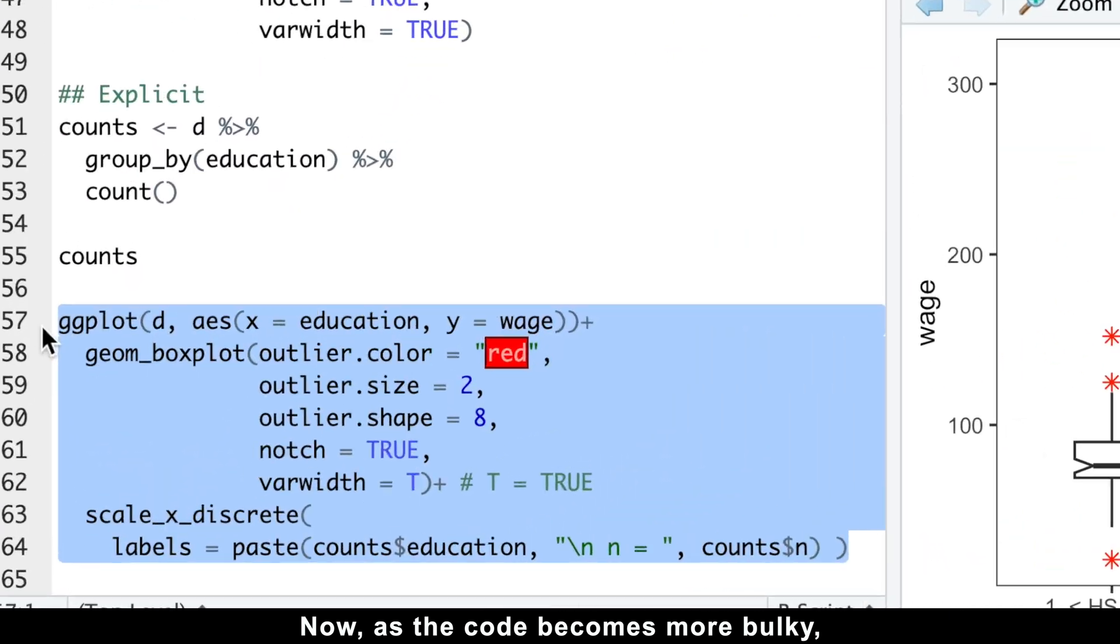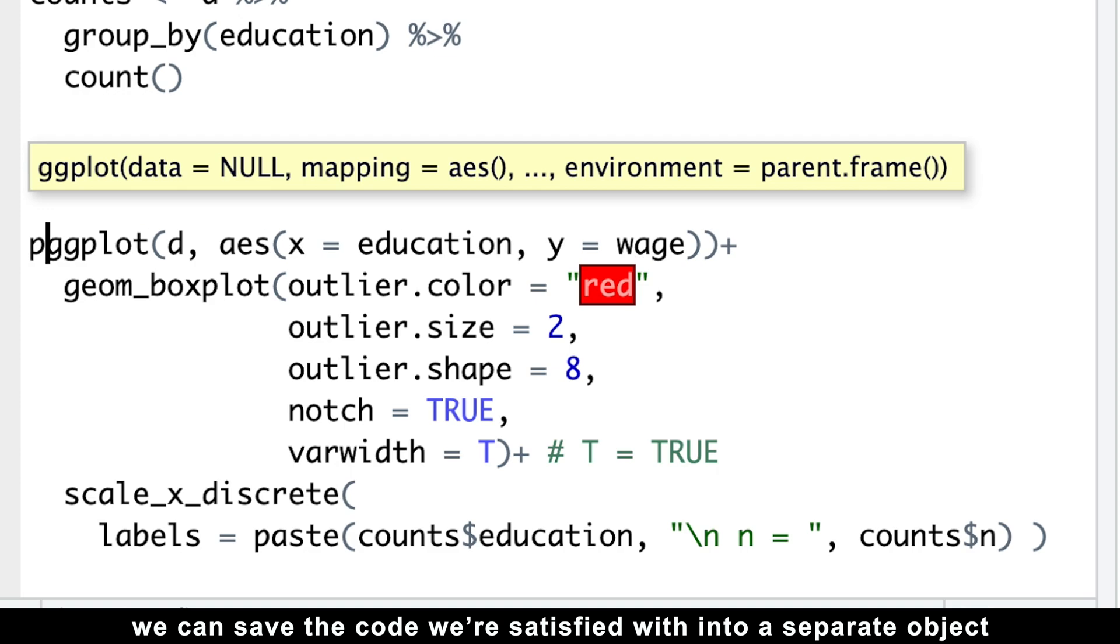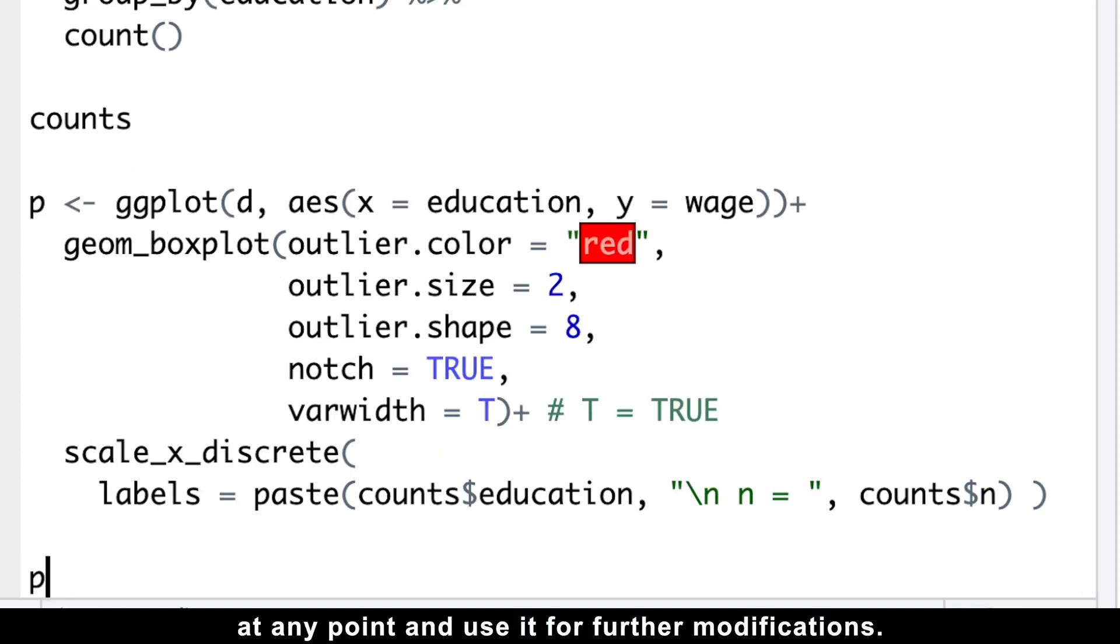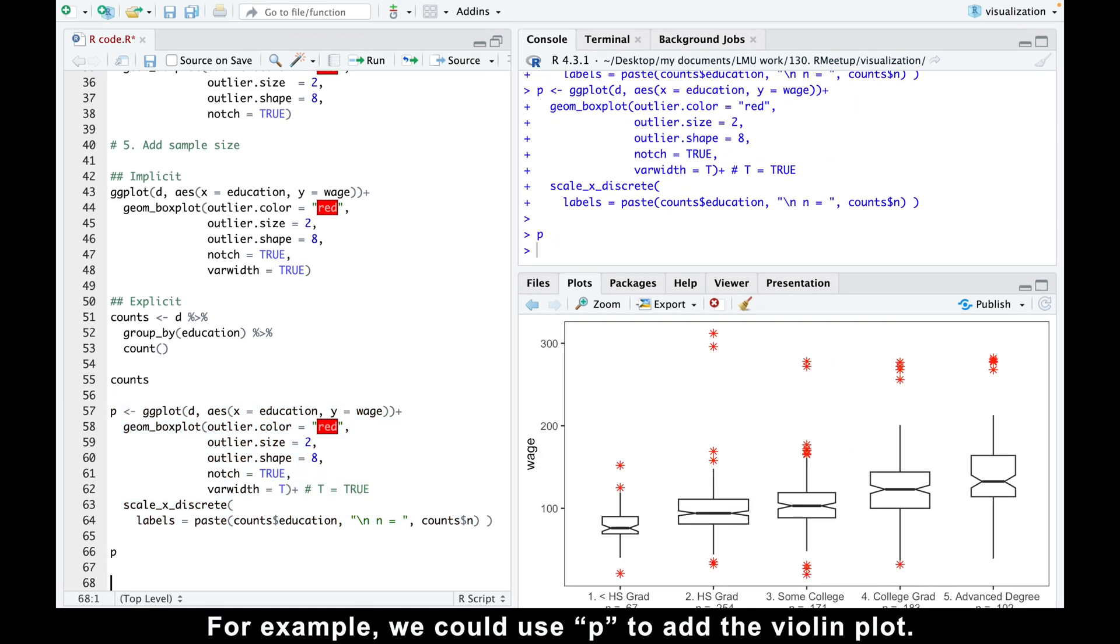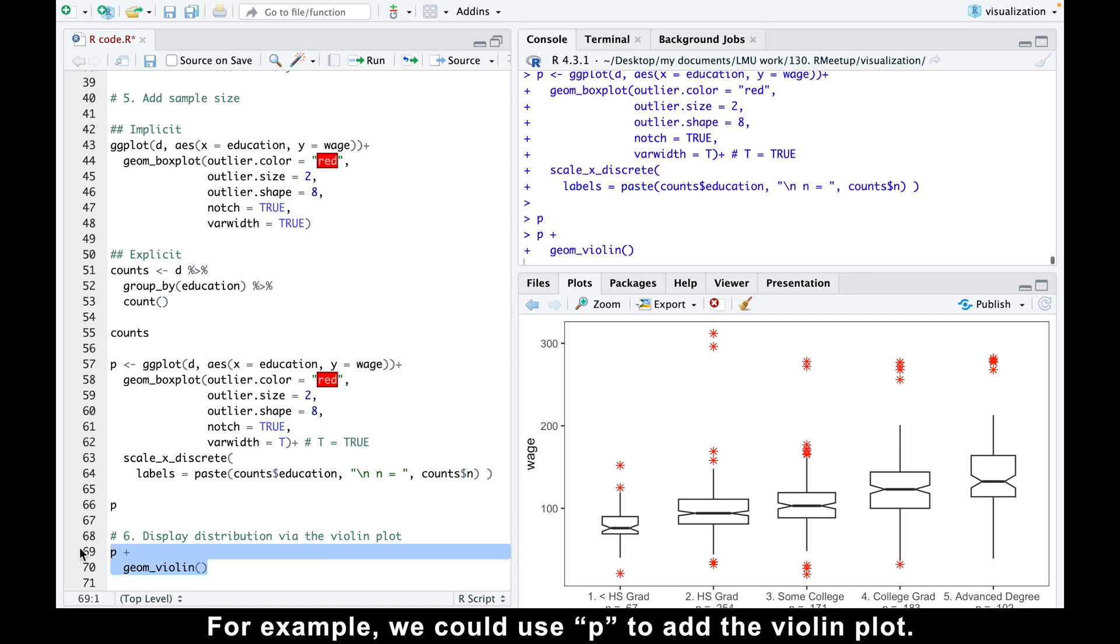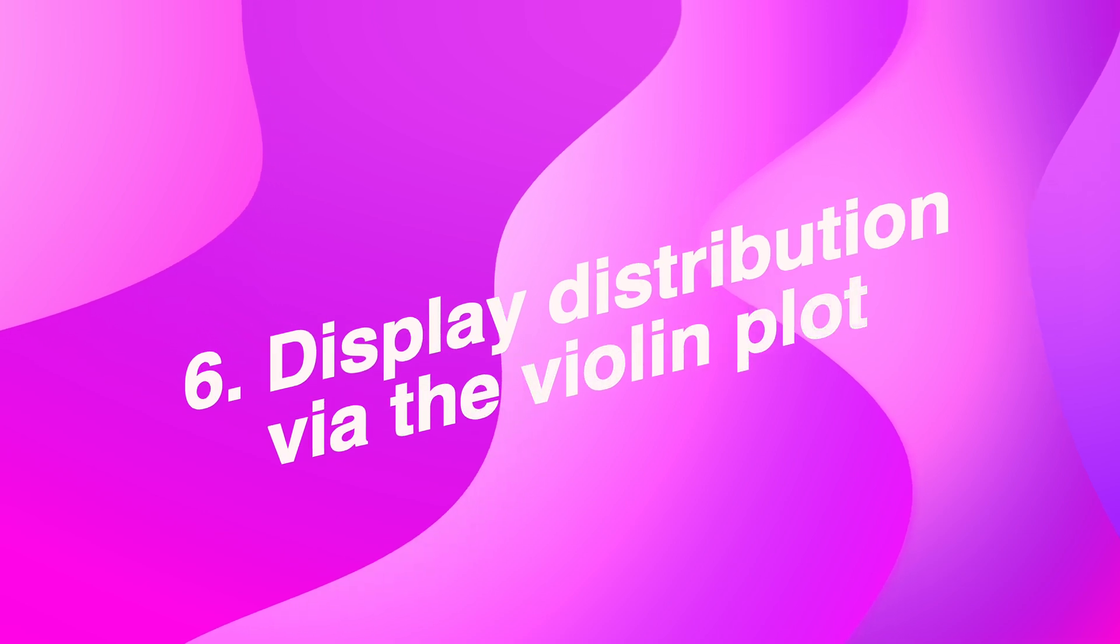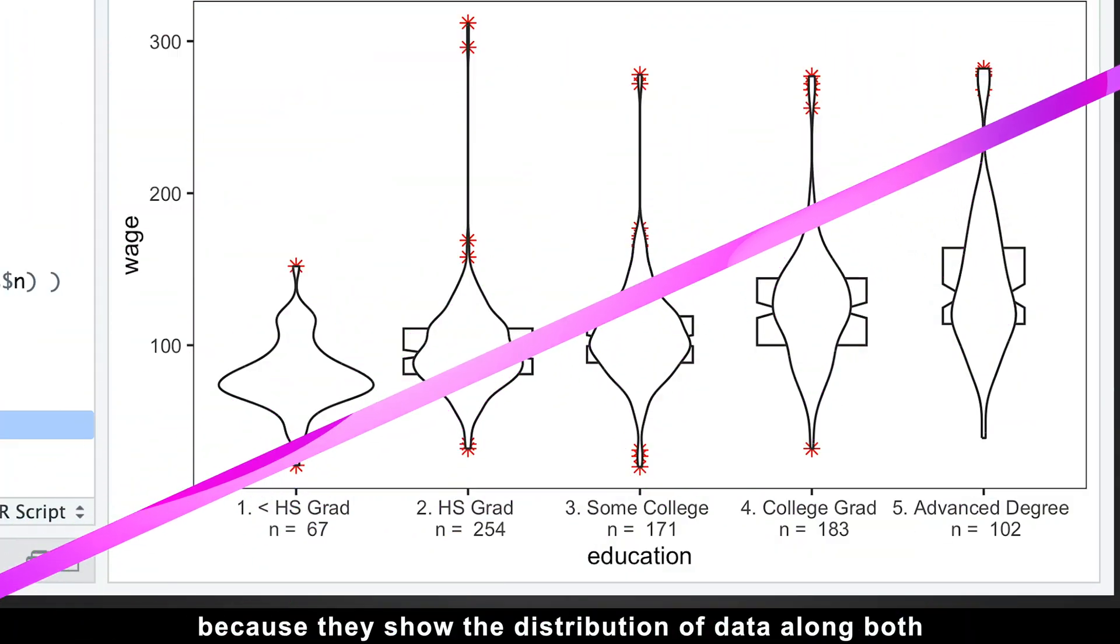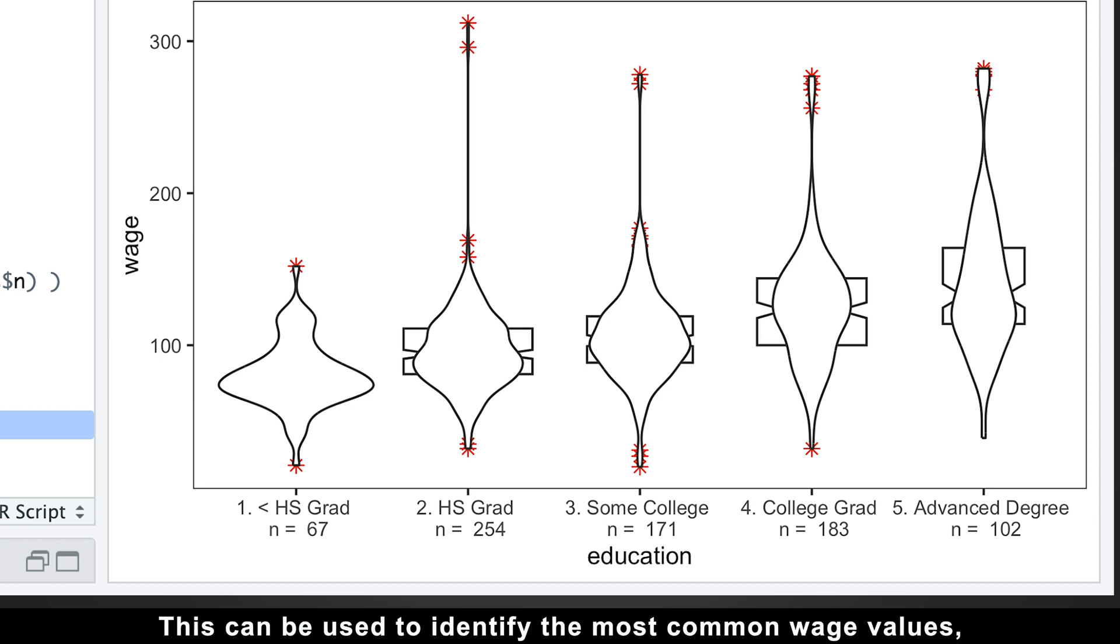Now, as the code becomes more bulky, adding new features to the plot may become overwhelming. To streamline our programming journey, we can save the code we are satisfied with into a separate object at any point, and use it for further modifications. For example, we could use p to add the violin plot. Why violins? Well, violin plot might be even more informative than boxplots, because they show the distribution of data along both the horizontal and vertical axis, revealing its shape, symmetry, and spread. This can be used to identify the most common values, the number of peaks, and to see whether the data is skewed or symmetric or normally distributed.